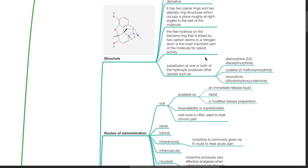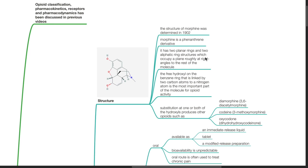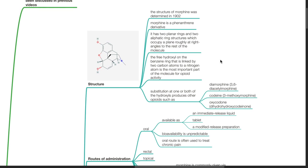Morphine structure. The structure of morphine was determined in 1902. Morphine is a phenanthrene derivative. It has two planar rings and two aliphatic ring structures which occupy a plane roughly at right angles to the rest of the molecule. The free hydroxyl on the benzene ring that is linked by two carbon atoms to a nitrogen atom is the most important part of the molecule for opioid activity.